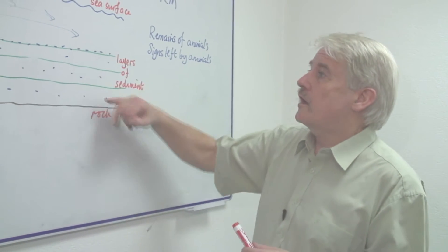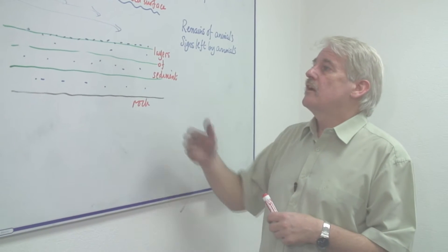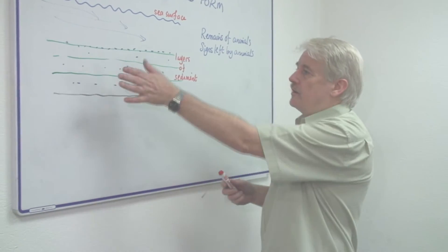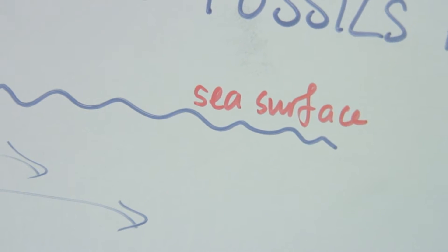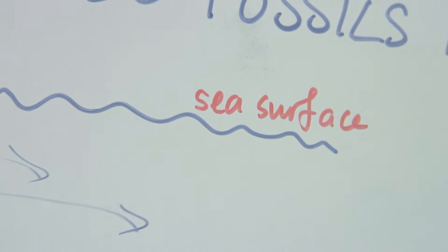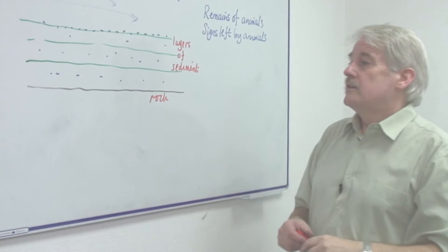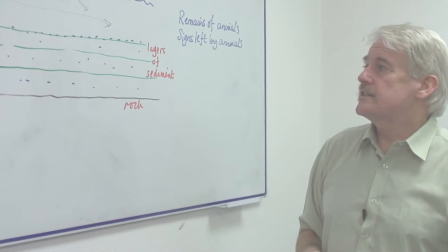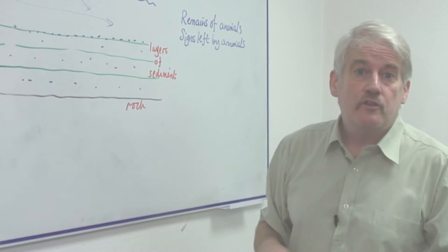we find in rock layers which have been formed at the bed of a lake or a sea. So if you imagine the rock layers forming upwards, then the fossils are found within that. And depending on where they are within the rock sequence, you can tell how old the fossil is.